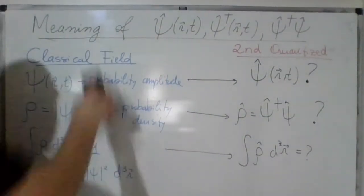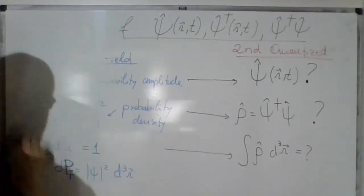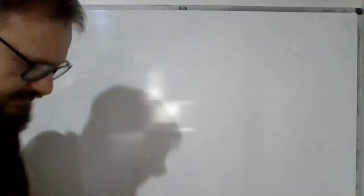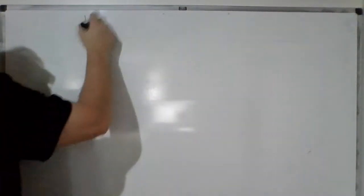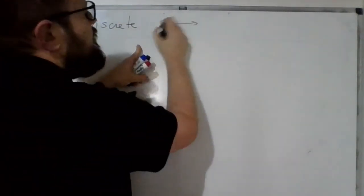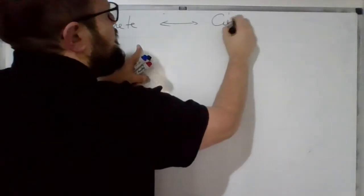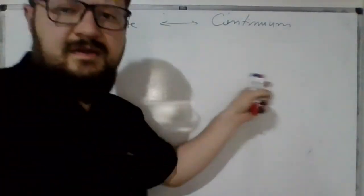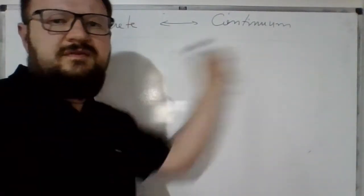First, let me address another issue: in quantum fields it is commonplace to switch from a discrete to a continuous representation and vice versa. So there are discrete representations and continuum representations of these operators. How do we get the continuum from the discrete, or vice versa?